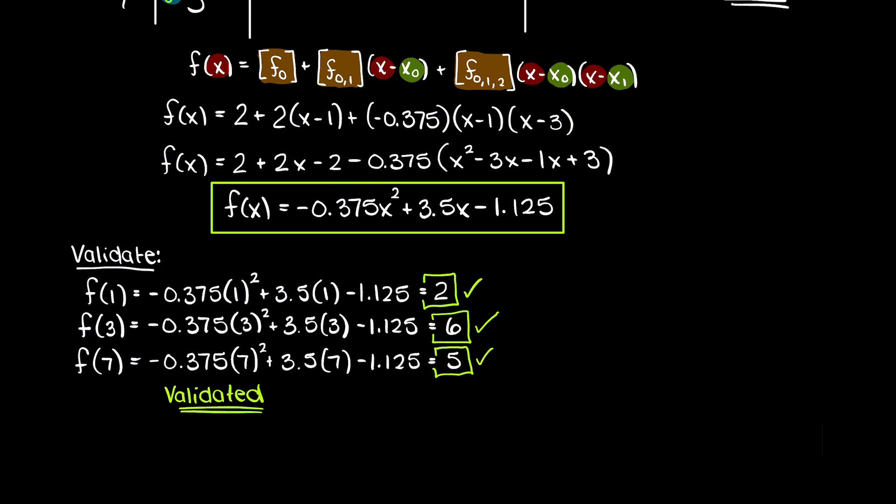As you can see our polynomial interpolating function is correct as it passes through all three of our nodes or our data points.